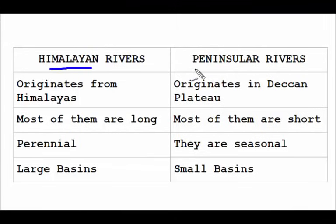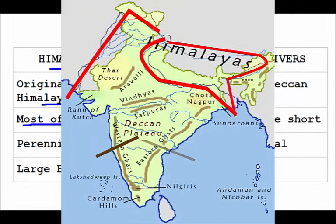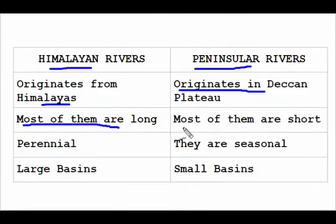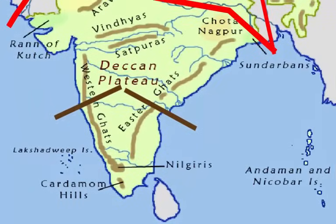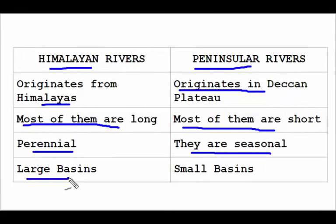Himalayan rivers originate from the Himalayas due to melting ice and glaciers, while peninsular rivers originate from the Deccan Plateau due to rainfall. Most Himalayan rivers are long — covering great distances from the Himalayas to the Arabian Sea or Bay of Bengal — while peninsular rivers are short due to the shorter distance from the plateau to the sea. Himalayan rivers are perennial because glaciers melt throughout the year, whereas peninsular rivers are seasonal, heavily dependent on precipitation. River basins in the Himalayas are large while peninsular basins are smaller, and many peninsular rivers dry off without rainfall.